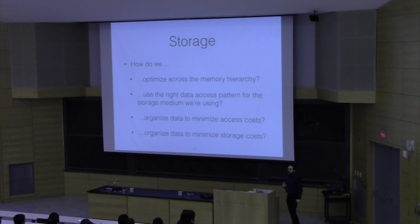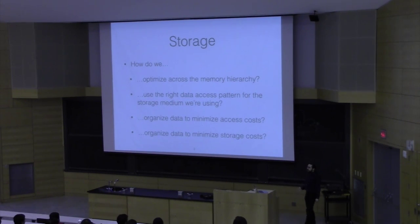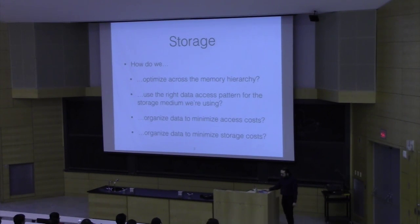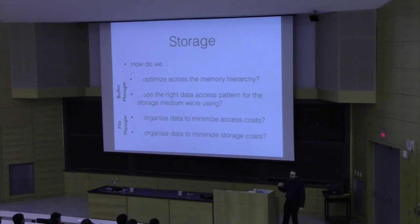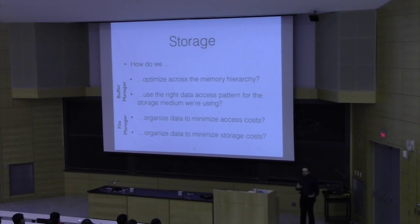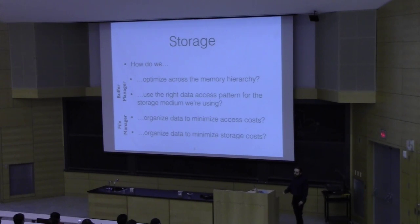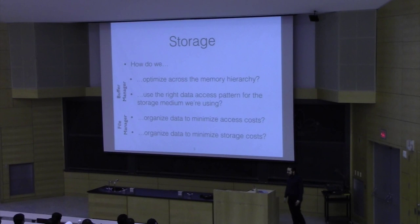How do we minimize the cost of actually storing it? Because disk may be cheap, but it's still a cost. In a typical database, there are two components you're likely to see: one called a buffer manager that addresses how you keep data in memory efficiently, and one called the file manager that addresses the actual representation of the data on disk.